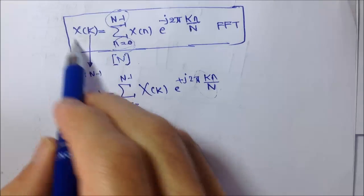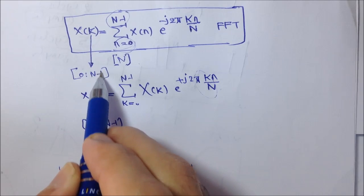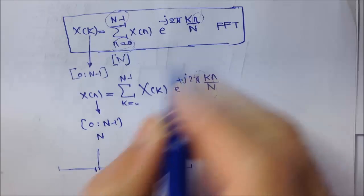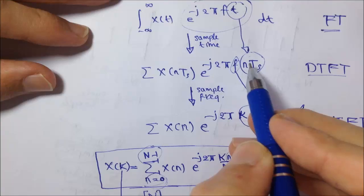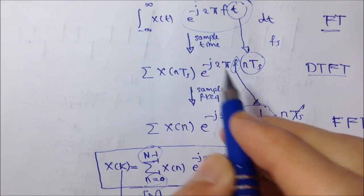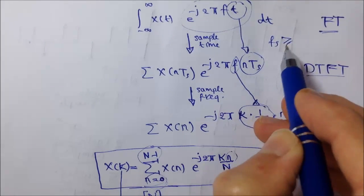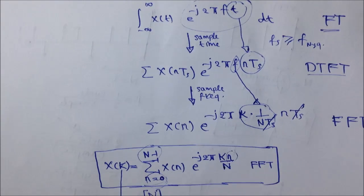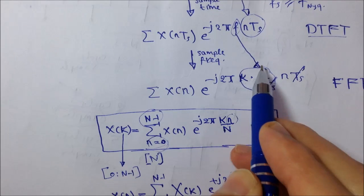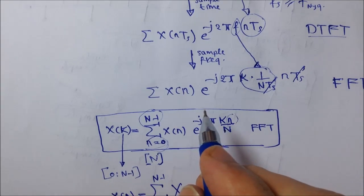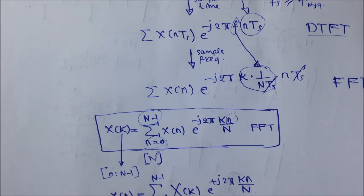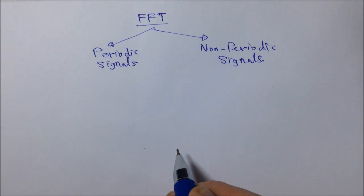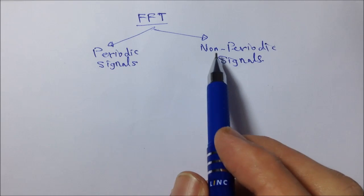Similarly, if you try to plot the spectrum for a range outside 0 to N minus 1, the spectrum will also repeat itself because we have sampled the time. So we have a periodic discrete time domain signal mapping to a periodic discrete frequency domain. The time domain sampling was done at a rate fs which may be larger than the minimum Nyquist rate, but the frequency sampling was done at the minimum critical rate. This is why zeros are padded to the time domain signal to increase the frequency resolution.